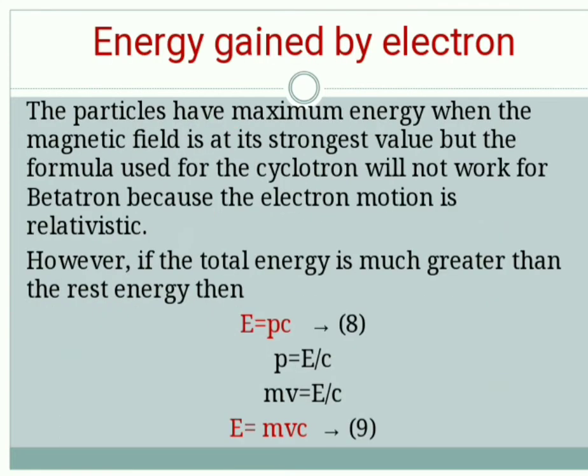Next is energy gained by electron. The particles have maximum energy when the magnetic field is at its strongest value. The formula used for cyclotron will not work for this Betatron condition. In order to obtain energy, I have taken E equals pc relation, where p can be written as E/c. Instead of p, Mv equals E/c, so E equals Mvc.